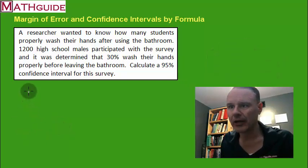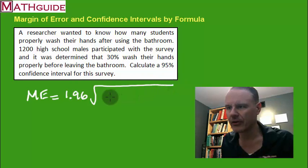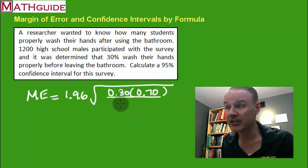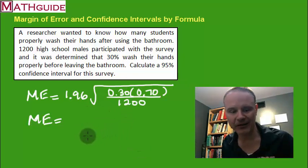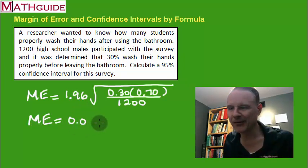You pull out the formula: margin of error equals 1.96, and again I'm just throwing this all into the formula. I know that the percentage there is 0.30 and in parentheses I'm supposed to put one minus 0.30. One minus 0.30 is 0.70. How many people participated? 1200. Now I threw this into the formula already, or I should say threw the formula into these numbers into the formula in my calculator, and this is what comes out of the calculator: 0.0259.